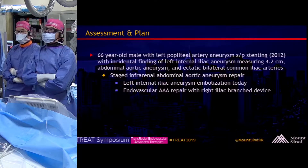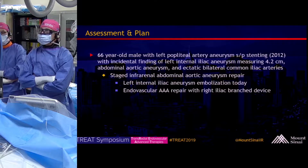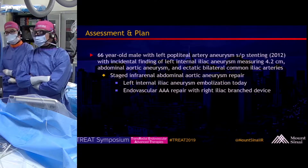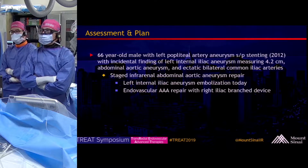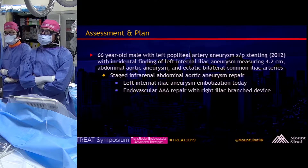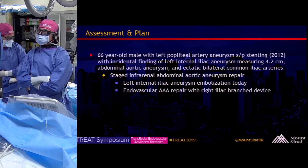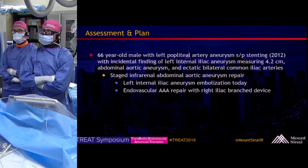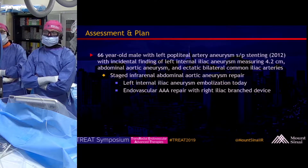Our assessment and plan: this is a 66-year-old male with a history of left popliteal aneurysm that was stented. He has this left internal iliac artery aneurysm identified on recent imaging. He is for a staged procedure. Today we will be embolizing the left internal iliac artery aneurysm, and then in the future he will have an endovascular AAA repair with a branched iliac device.